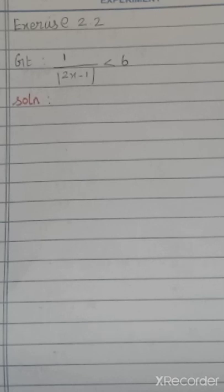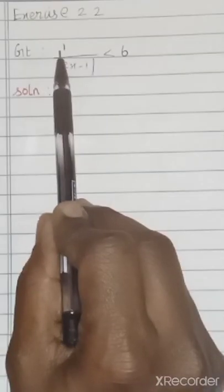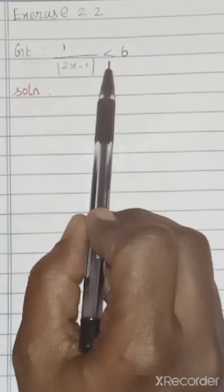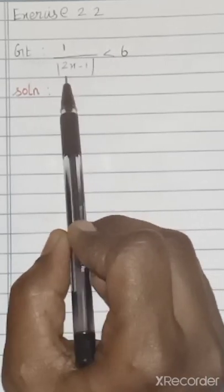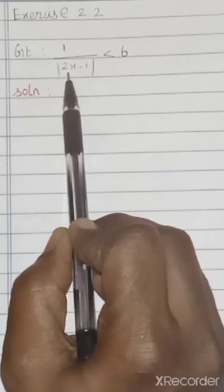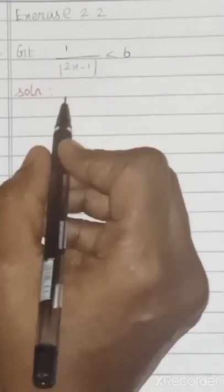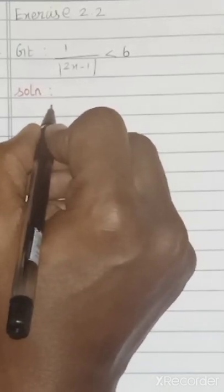First problem already we completed. So second problem: solve 1 divided by mod(2x minus 1) less than 6, and express the solution using interval notation. So the question given is 1 over |2x − 1| < 6. We have to solve this absolute value and find out your x value.